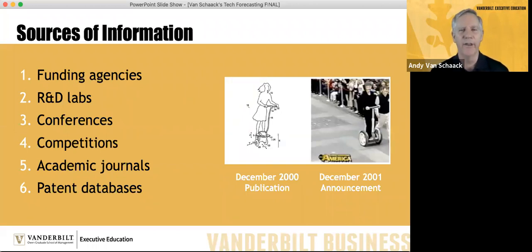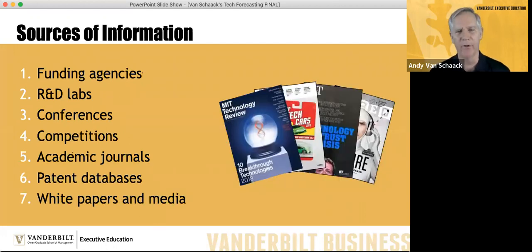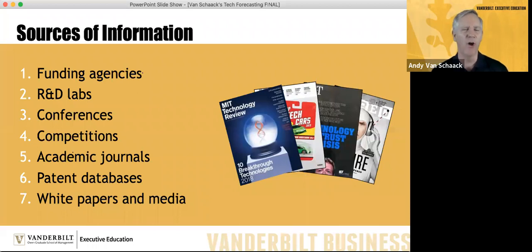There are a variety of competitions like the XPRIZE — DARPA, NASA, and other governmental organizations have competitions to incentivize research groups to solve interesting problems. Academic research appears in tens of thousands of journals; the best way to access this if you're not in academia is through Google Scholar. Patent databases are also valuable — when you file a patent it's published within 18 months in the United States. Dean Kamen's patent for what became the Segway was published in December 2000, and it was announced on Good Morning America a year later. You can look at the patent database to discover new technologies you'll be seeing on the marketplace in months or years. Finally, white papers and media like MIT Technology Review, IEEE Spectrum, and Wired carry interesting information — but what they cover appeared in those other sources months or years earlier.